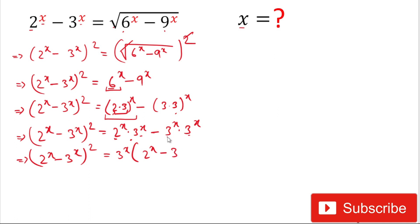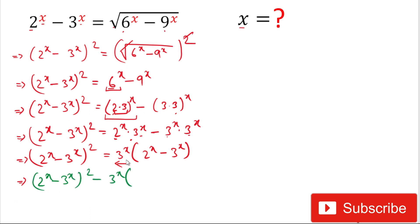Now we bring everything to the left hand side. We get (2^x minus 3^x)² minus 3^x times (2^x minus 3^x) equals 0. From here, we can factor out (2^x minus 3^x) as a common factor from both terms.